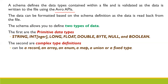The Avro schema defines two types of data: primitive data types and complex type definitions. Primitive data types include string, integer, long, float, double, byte, null, and boolean. Complex types include record, array, enum, map, union, and fixed type.